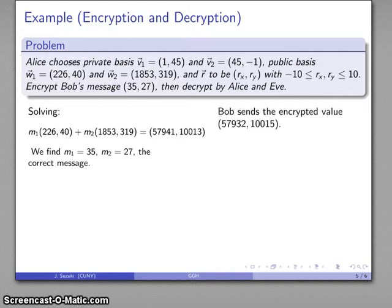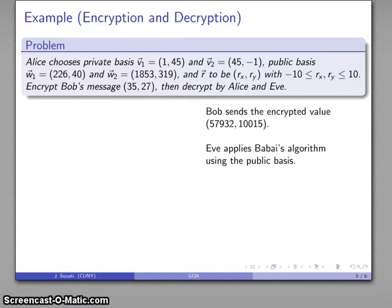Now, what about Eve? Bob has sent this encrypted value here. So Eve can try to solve the closest vector problem, but she has to use the public basis to do so.